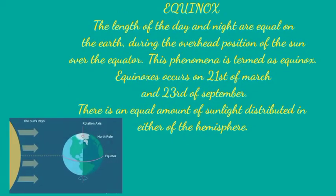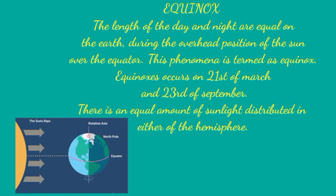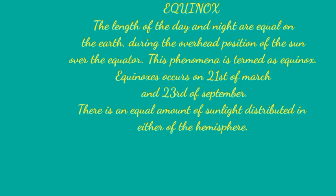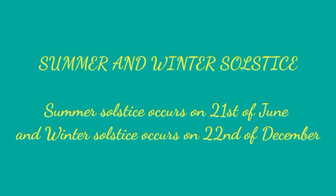The reason we call 21st of March and 23rd of September equinoxes is because on these days the length of day and night remains equal — 12 hours of daylight and 12 hours of darkness. This happens because the Sun during these times is positioned directly over the equator at zero degrees, and hence there is an equal amount of light transmitted in the northern hemisphere as well as in the southern hemisphere.